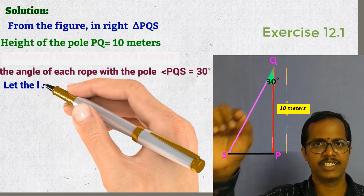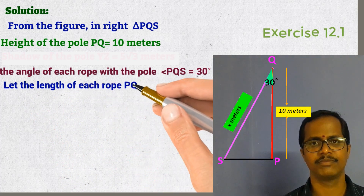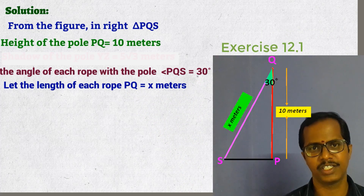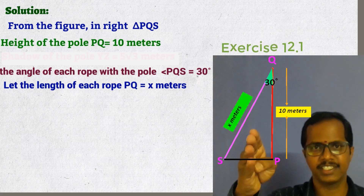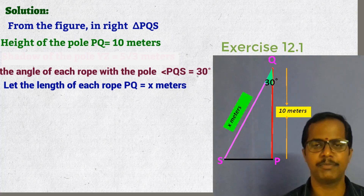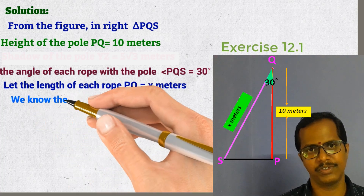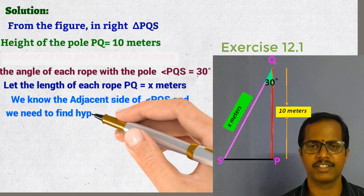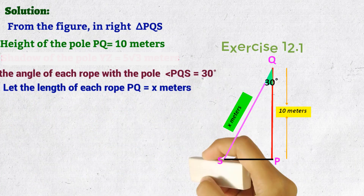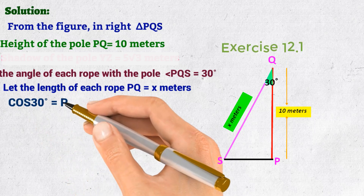Let us assume the length QS as X meters. For the given angle of 30 degrees, the given side PQ is the adjacent side and we need to find the hypotenuse. We know the ratio between the adjacent side and hypotenuse is cosine. Hence we need to take the cosine trigonometric ratio: cos 30 degrees equals PQ divided by QS.